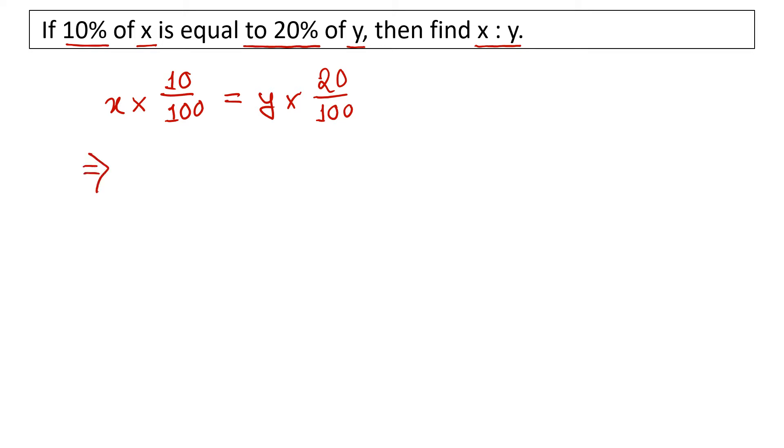Now if we multiply by 100, we get 10x is equal to 20y. If we divide 10 by 10, then x is equal to 2y.